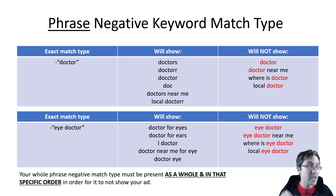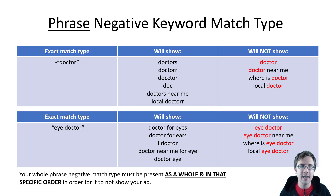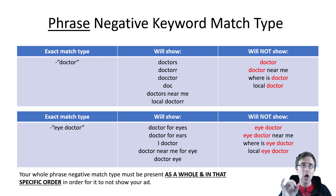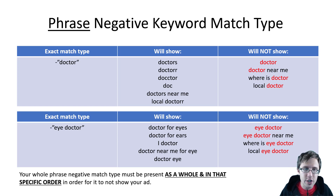Now let's go to phrase negative keyword match type. As you can see here, I have quotation marks which means it's phrase, and again the negative sign. So if you have 'doctor' as a phrase negative match type, your ad will successfully not show if someone types in 'doctor', 'doctor near me', 'where is doctor', or 'local doctor' — as long as that exact word is anywhere in the search query. But it will still show if there are misspellings, like 'doctors near me', since that word has to be present exactly in the query for your ad to not show.